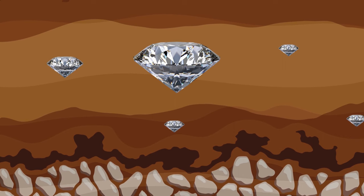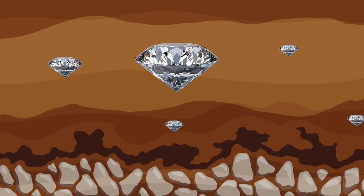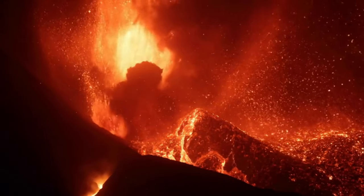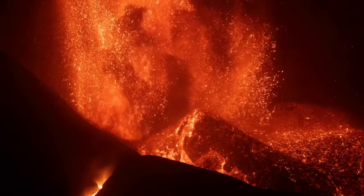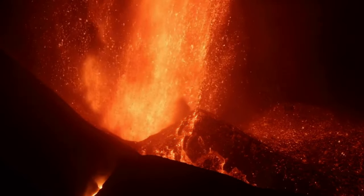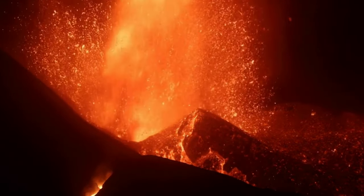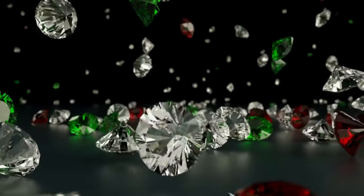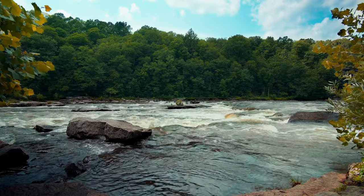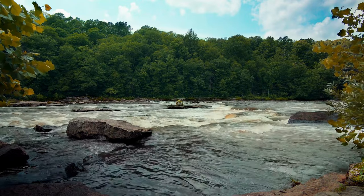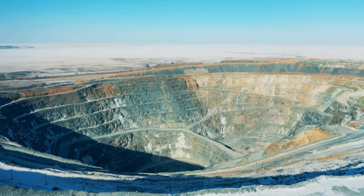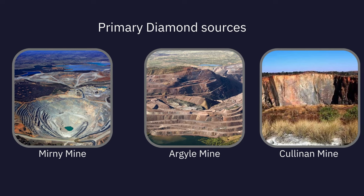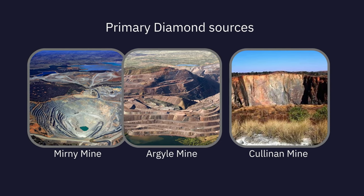Once diamond crystals are formed, they are still hundreds of miles away from being found and sold. Over millions of years, plate tectonics and volcanic eruptions help to bring diamonds to the surface, as volcanic magma carries diamonds and other minerals up. The majority of diamonds that are found come from areas known as primary or secondary diamond sources. Primary diamond sources are known diamond reserves located in certain parts of the world, usually near ancient rivers or kimberlite deposits, where kimberlite pipes form and carry diamonds up from the Earth's mantle. Some of the most famous primary diamond sources include Russia's Murni Mine, the Argyle Mine in Australia, and the Cullinan Mine in South Africa.